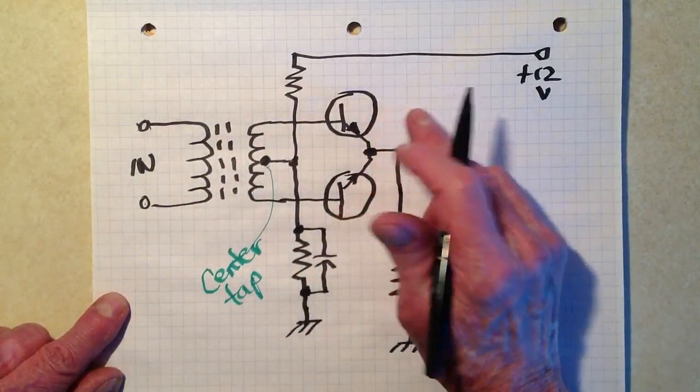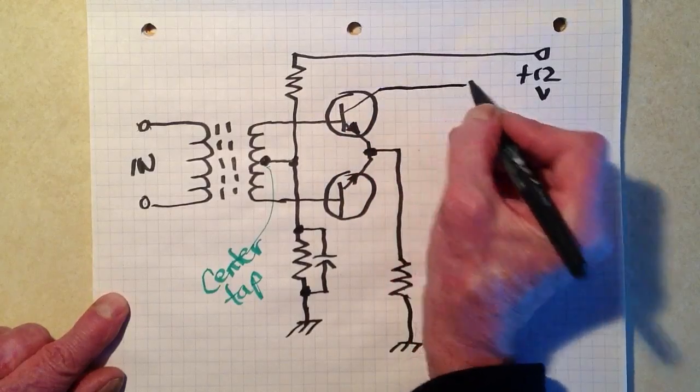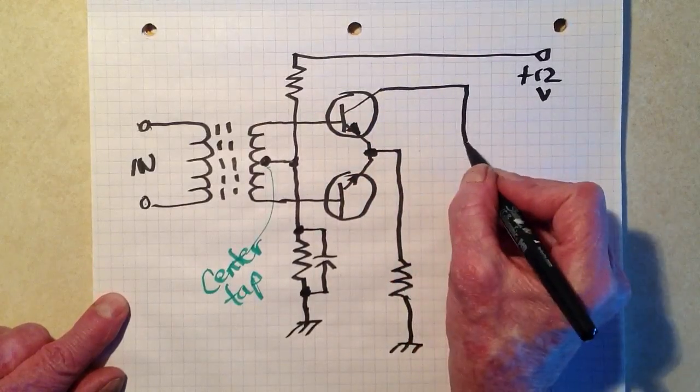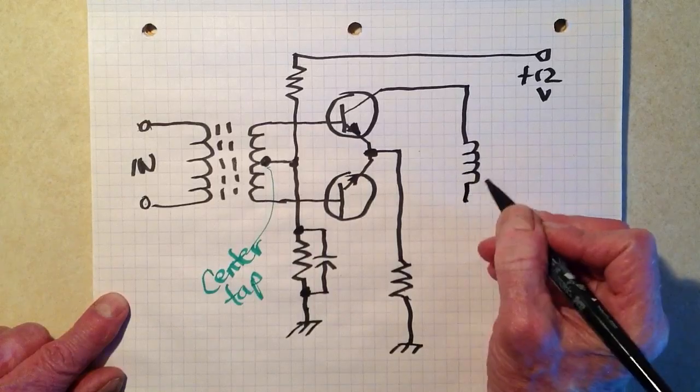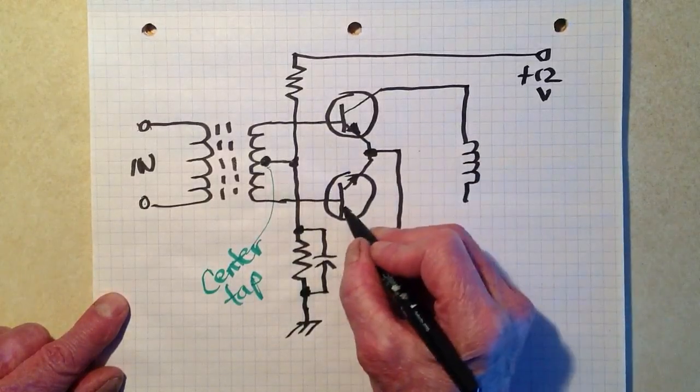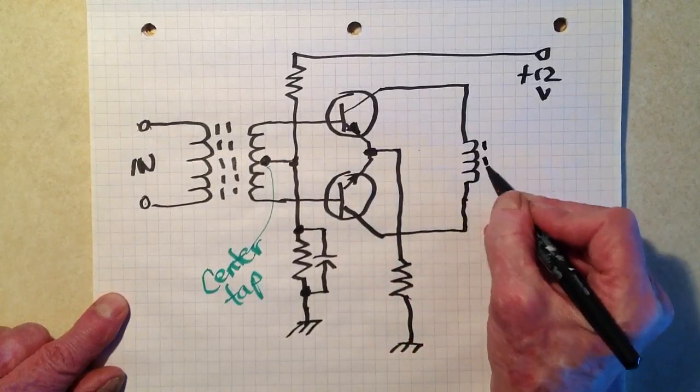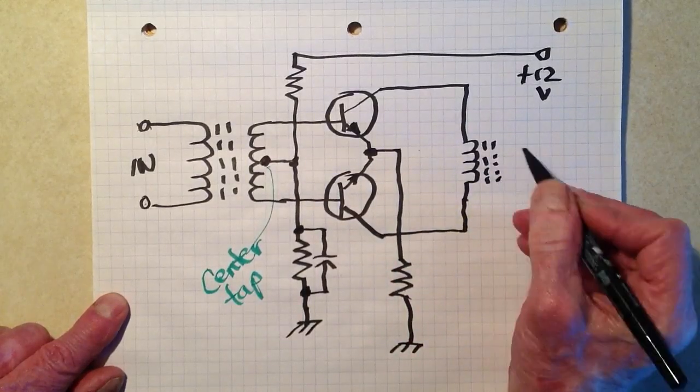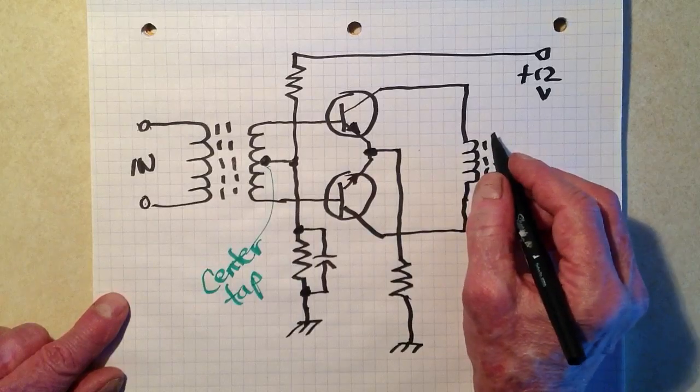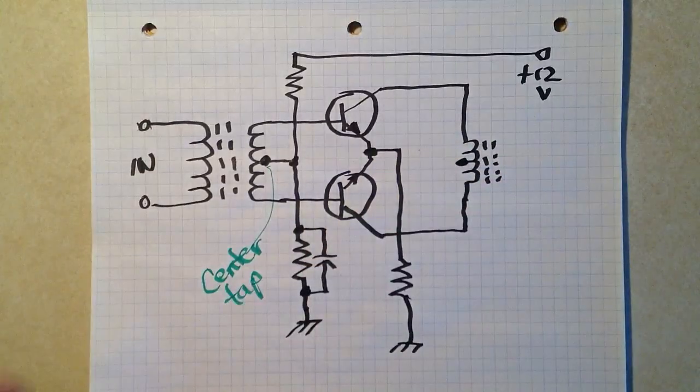It's very important that you understand that this tap has to go exactly in the center of the secondary winding. You don't want to adjust this for impedance, you want that thing right there in the center. Then you have another resistor here going to ground, a capacitor across that, and another resistor here going up to positive 12 volts, the positive power supply voltage. These two resistors here provide the proper bias for the bases of these transistors.